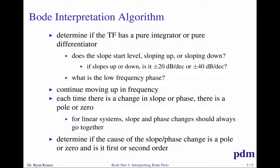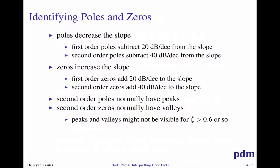For a linear system, every time you see a slope or phase change they should correspond. You just have to decide: is this a pole or a zero, first or second order? If the slope decreases 20 dB per decade, that is a first order pole. If it decreases 40 dB per decade, that is a second order pole. Zeros do the opposite: slope increased by 20 dB per decade is a first order zero; increased by 40 dB per decade is a second order zero.